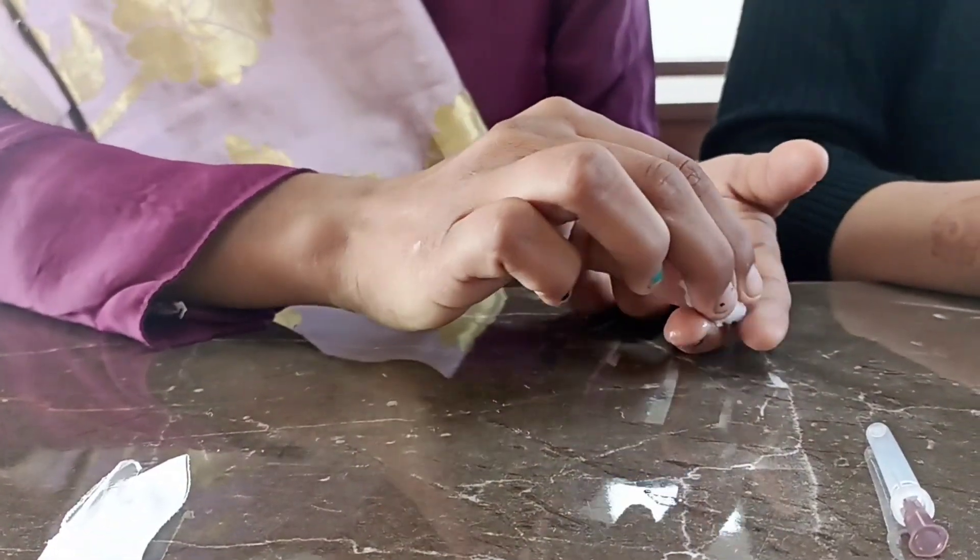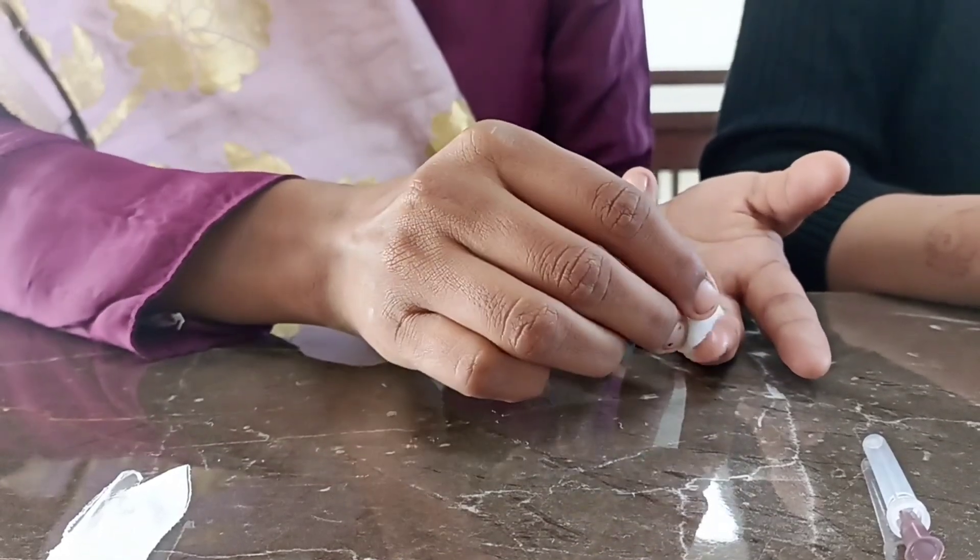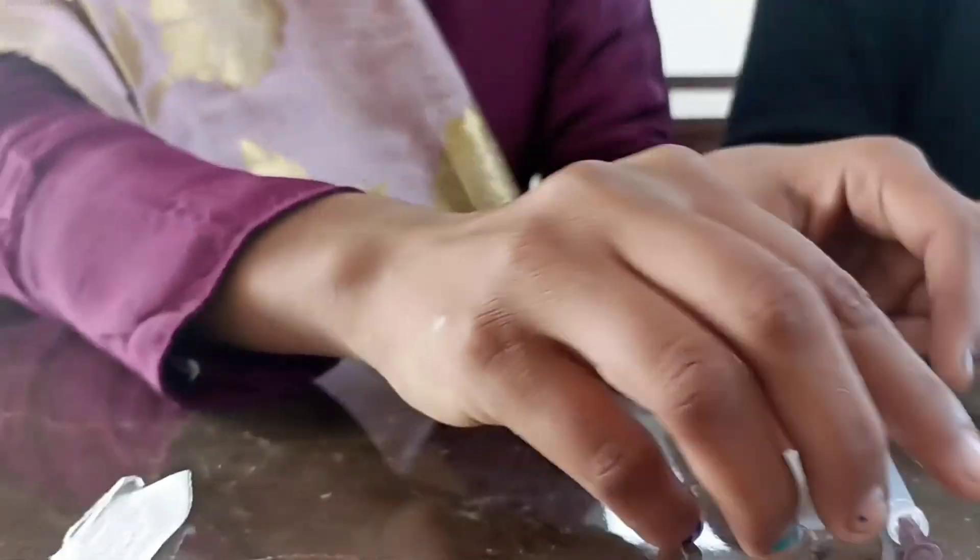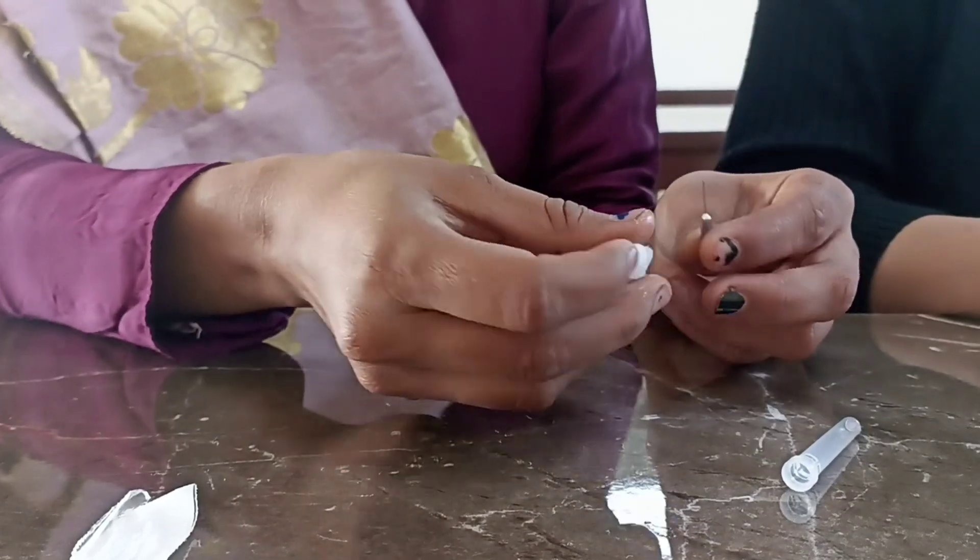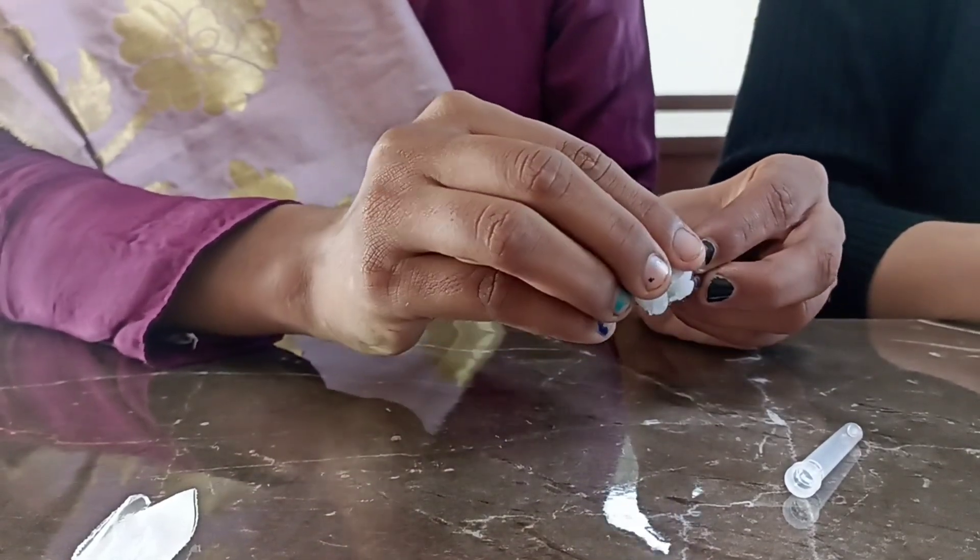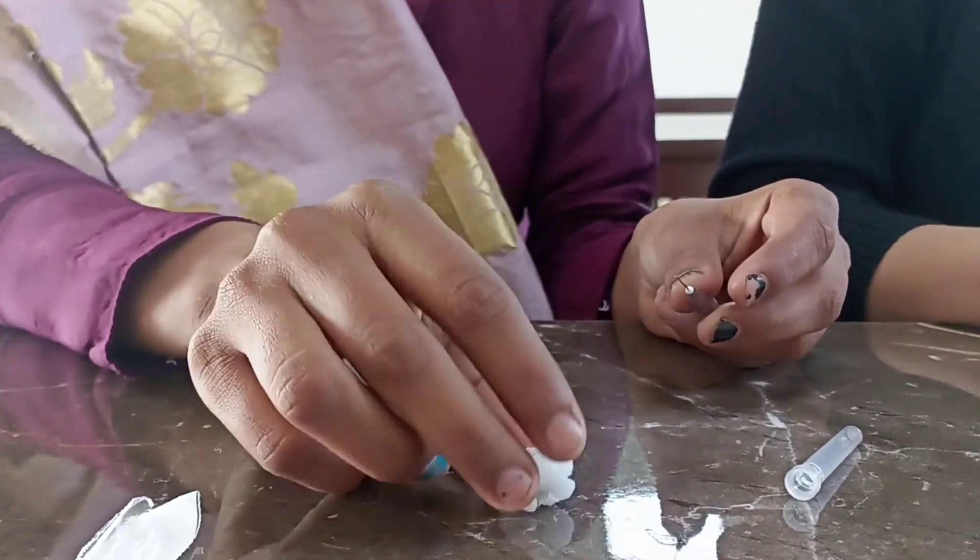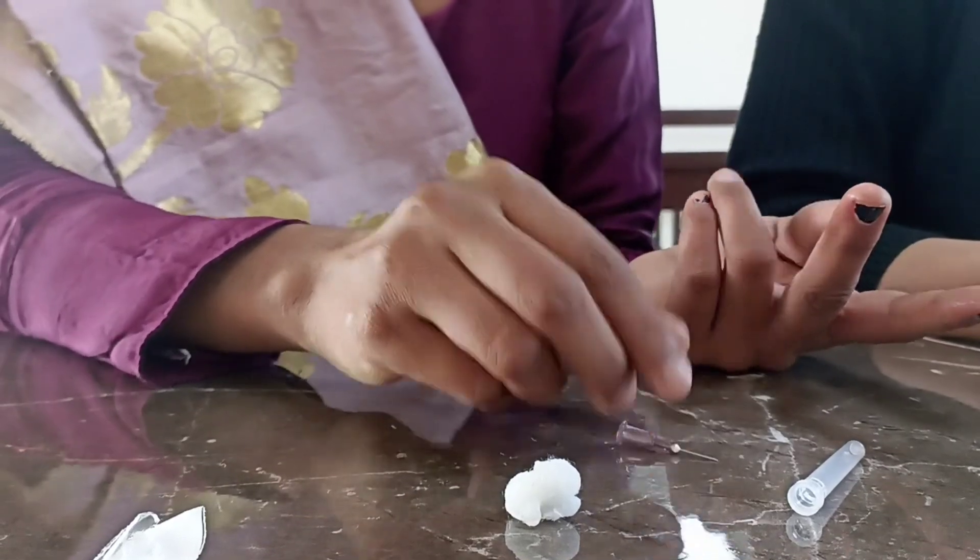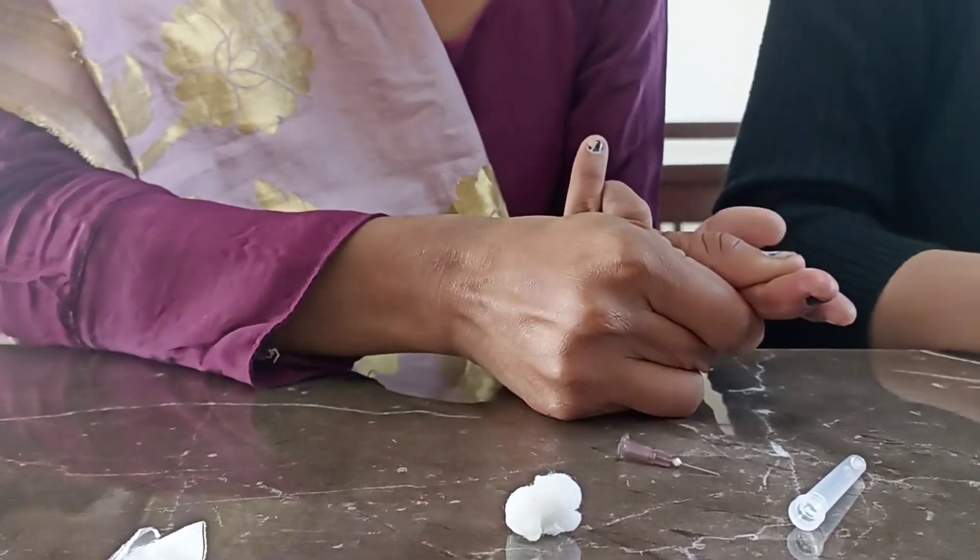Now, sterilize your middle finger with 90% alcohol. Take the pricking needle and clean it with 90% alcohol. Now prepare your finger for pricking by pressing along it.